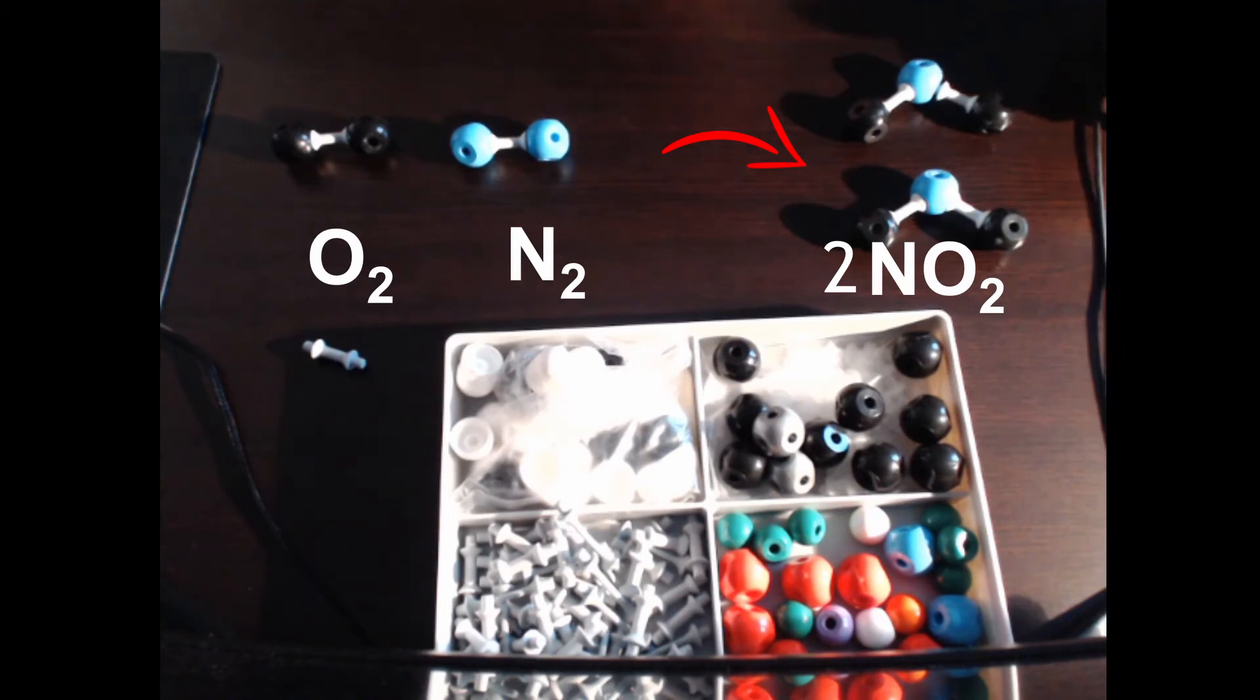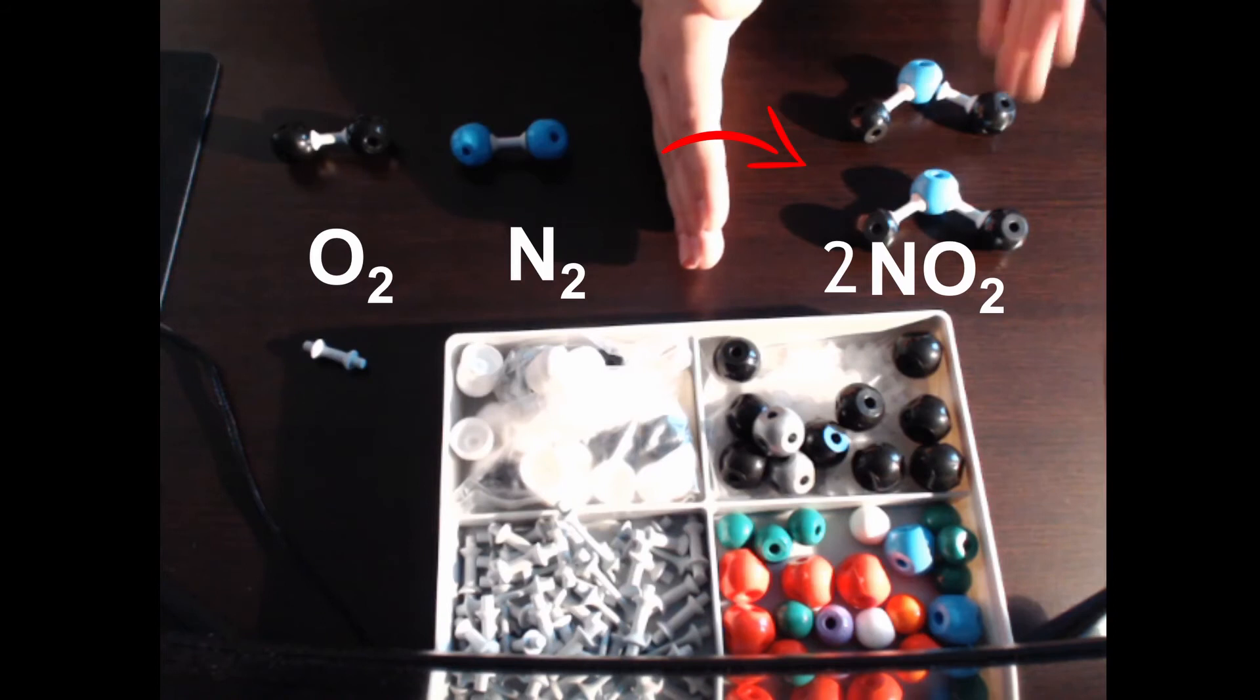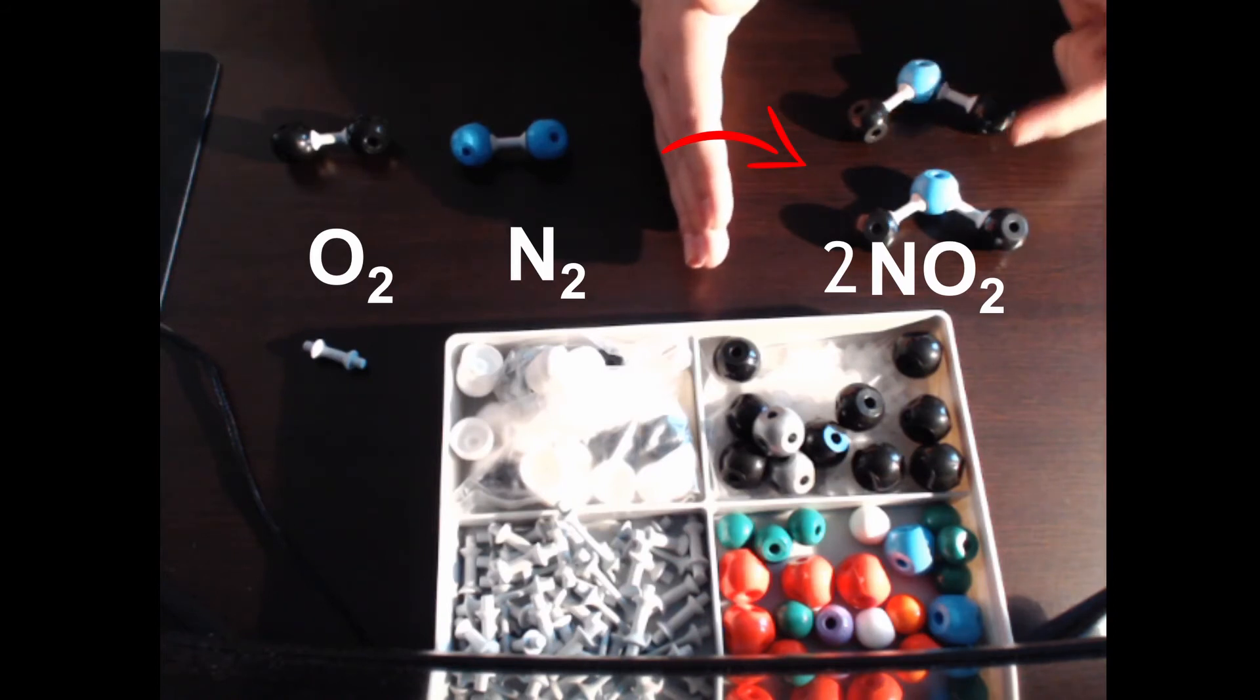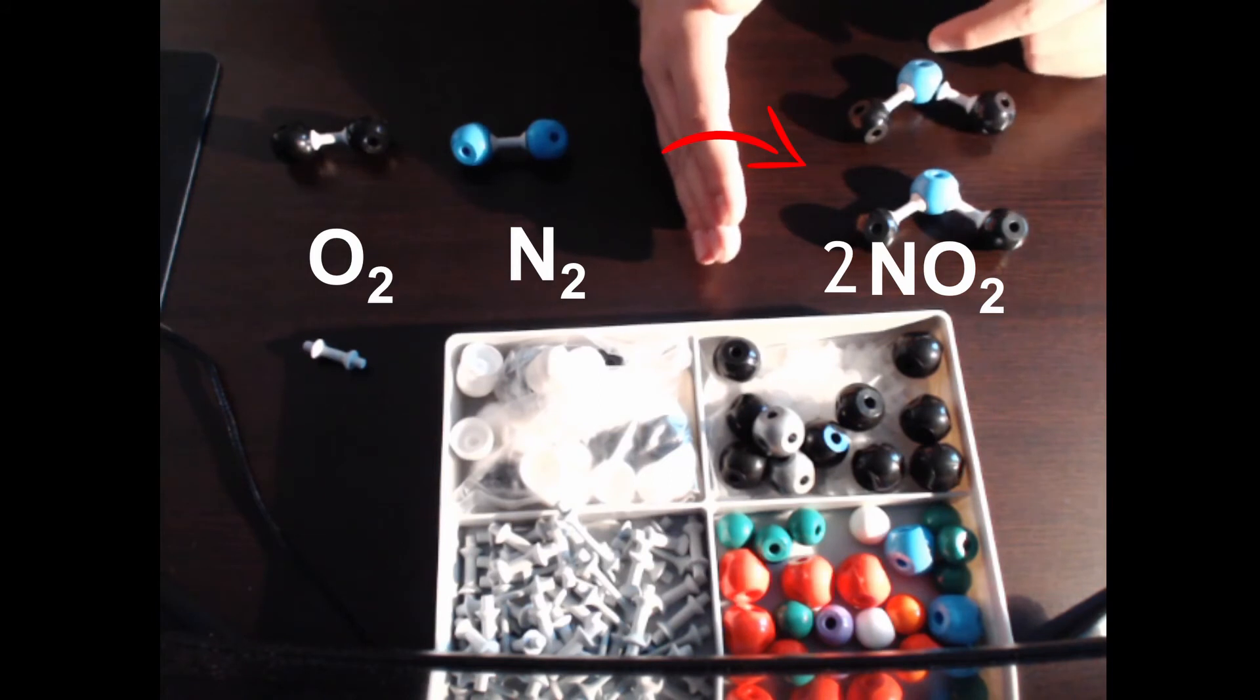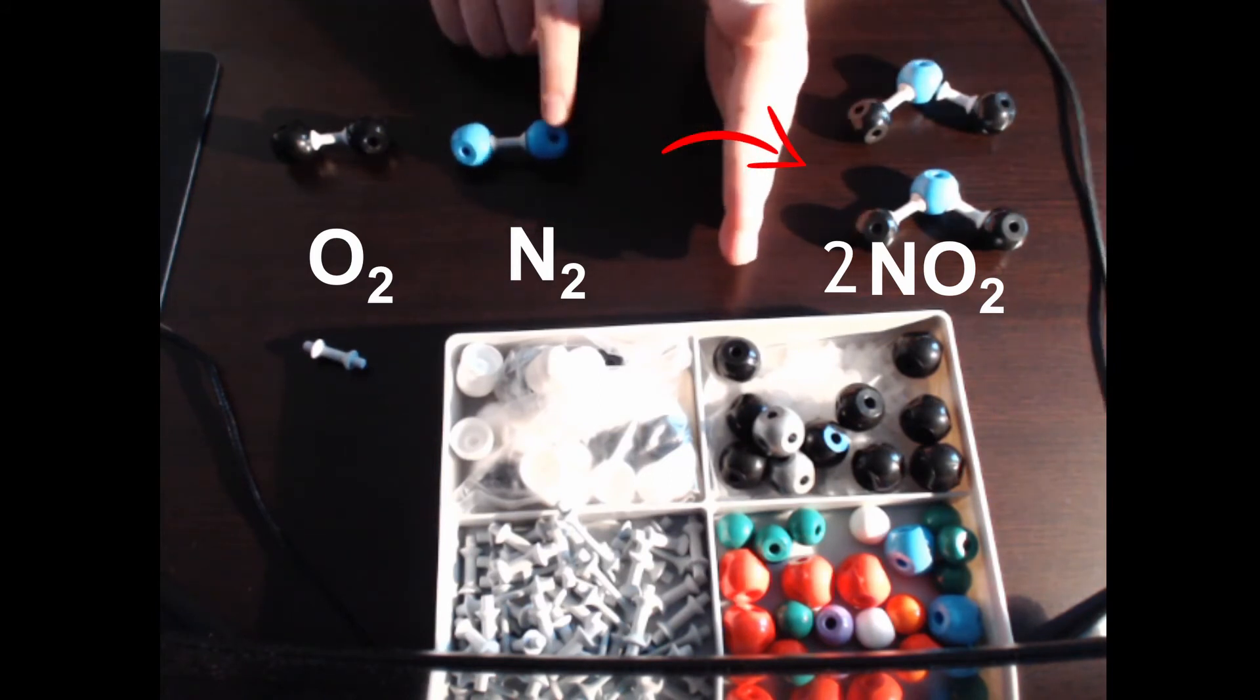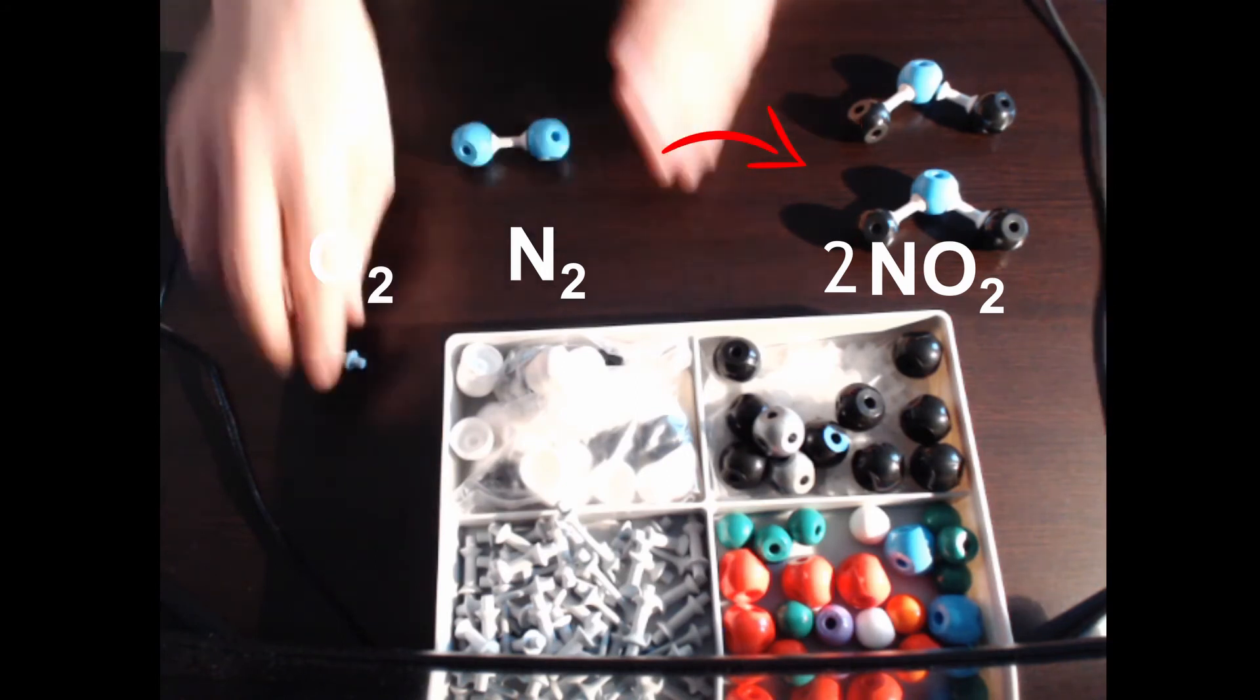But that doesn't work either because now we have an uneven number of oxygens on both sides. On this side here, we have four oxygens. There's one, two, three, four black balls, two blue balls. And if we go to the other side, we have two blue balls, which is fine. That means that there's an equal number on both sides, but we only have two of these.